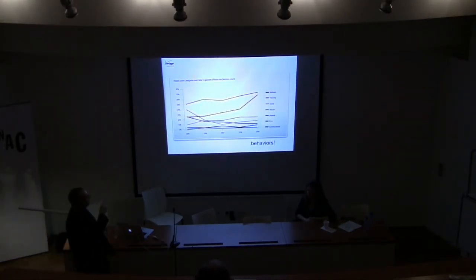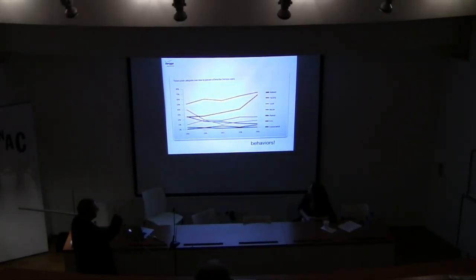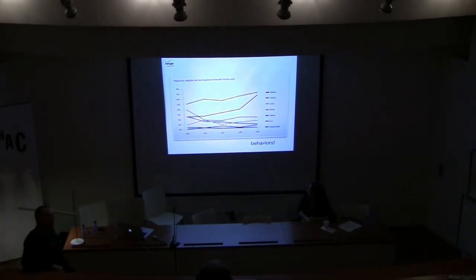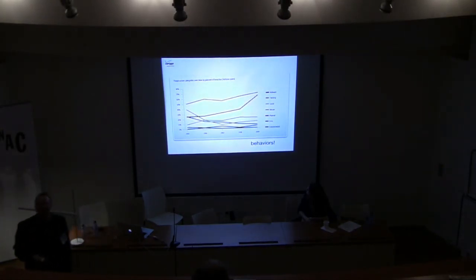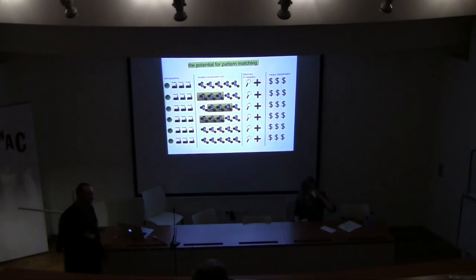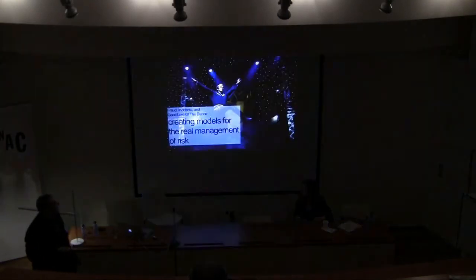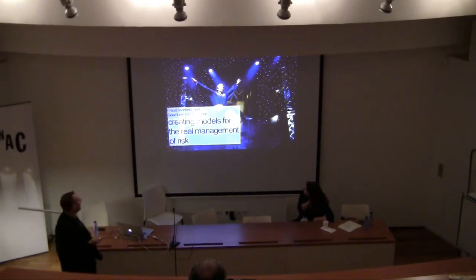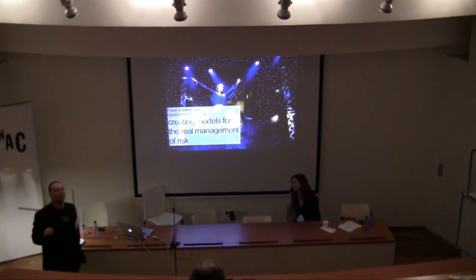What you end up with out of this is behaviors. This is our current dataset, showing action types from 2005 to 2009. What's awesome is that spike in malware use in 2008 corresponds to another spike in the use of custom malware. All of this is in the report that you can look at and utilize — the dataset is freely available; we don't even make you register. That gives us an understanding of these behaviors, which gives us the potential for pattern matching. And that is real risk management — something that's operationally proficient.